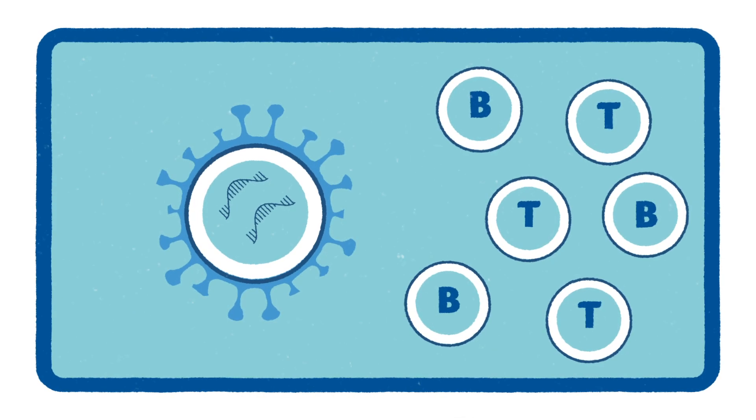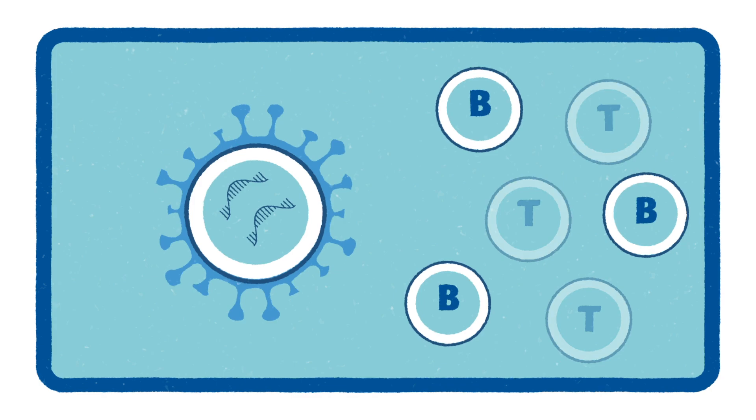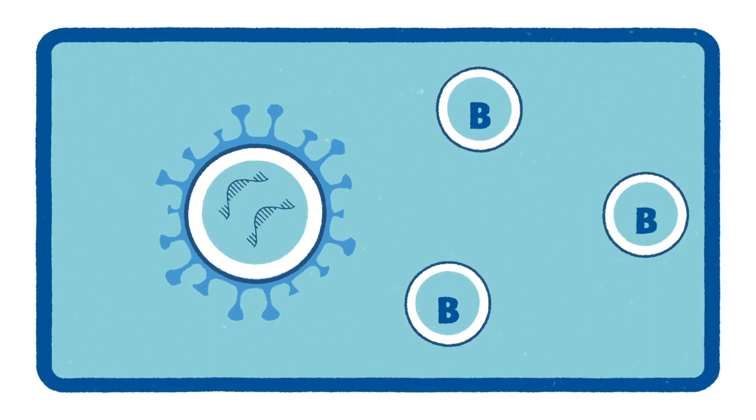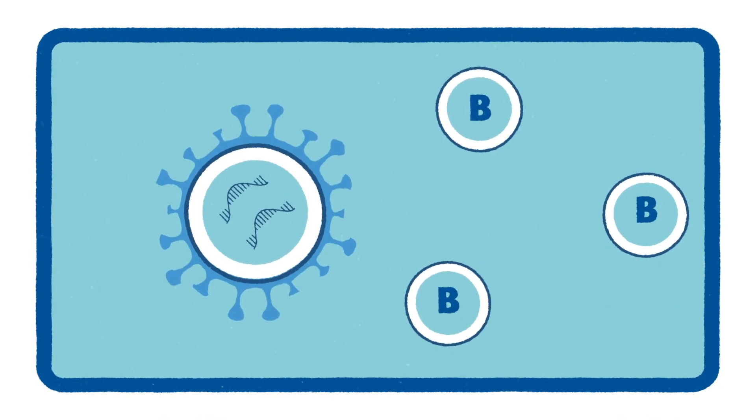Although many cell types help build this immune response, the cells that produce antibodies, referred to as B cells, are one of the most prevalent groups of cells to be activated. These cells, once primed by this immune response, begin producing protective, neutralizing antibodies.